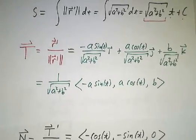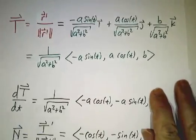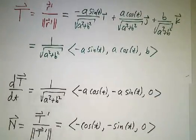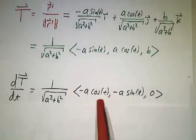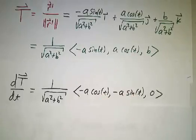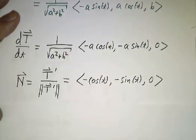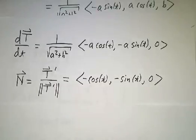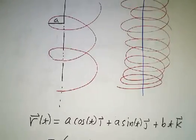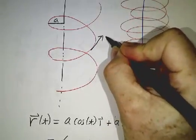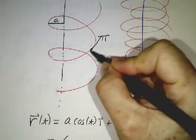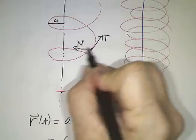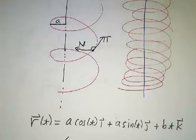Now that we've got our tangent vector, we want to figure out our normal vector. The normal vector is the direction that the tangent vector is changing, so we take the derivative of the tangent vector. The derivative of a·sin is a·cos, and the derivative of a·cos is −a·sin. If you want the unit vector — dividing by its length — all you're left with is ⟨−cos(t), −sin(t), 0⟩. So our tangent vector is going around the circle and tilting up, while our normal vector is pointing straight in towards the axis. These are perpendicular.